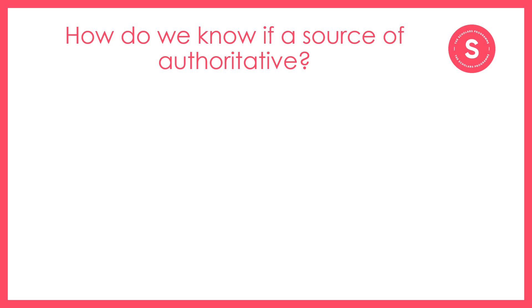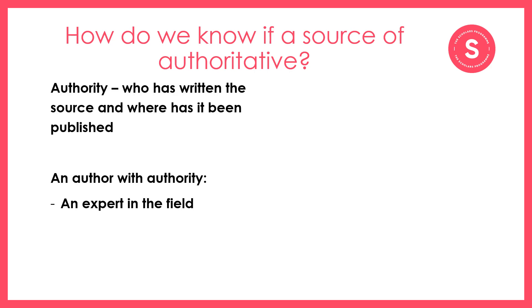The next part of the session is going to focus on how to assess whether a source is authoritative — meaning it has authority. To work out if something has authority, we are finding out who has written the source and where it has been published. We know someone has authority if they are an expert in the field in which they are writing. For example, a modern historian who writes about the Cold War has more authority on the topic than a biologist. Someone who has written a PhD on biodiversity has more authority on that topic than a year eight student who studied it in their geography lesson. Can you think of some more examples? You can pause the video now to take a moment to think of some.